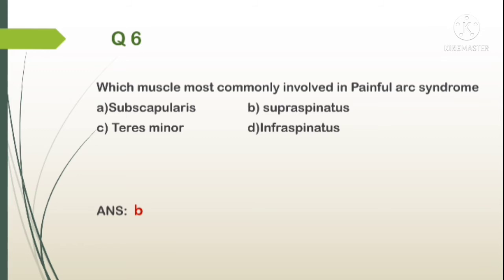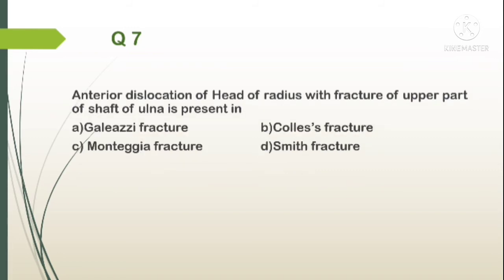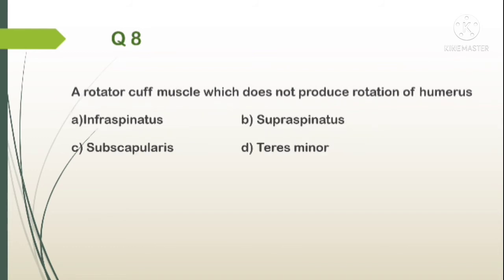Question number 7. Anterior dislocation of the head of radius with fracture of the upper part of shaft of ulna is present in: A. Galeazzi fracture, B. Colles fracture, C. Monteggia fracture, D. Smith fracture. The answer is C. Monteggia fracture. In Galeazzi fracture, inferior radio-ulnar joint dislocation occurs with lower end of radius fracture.